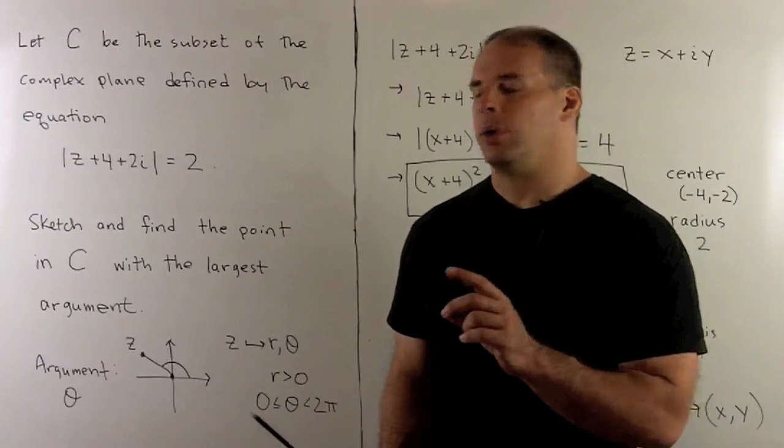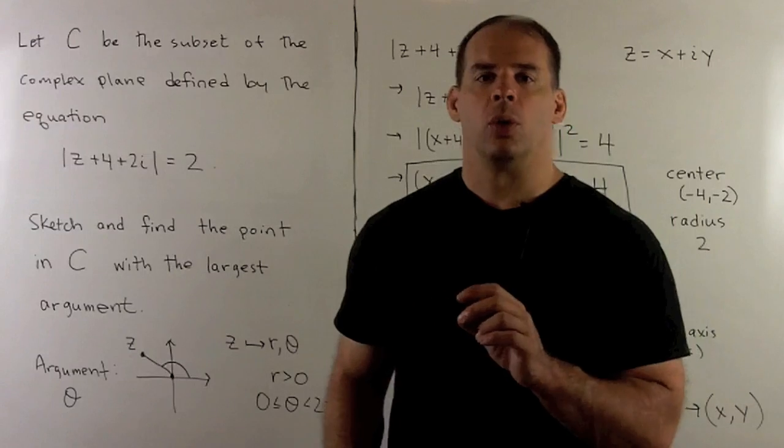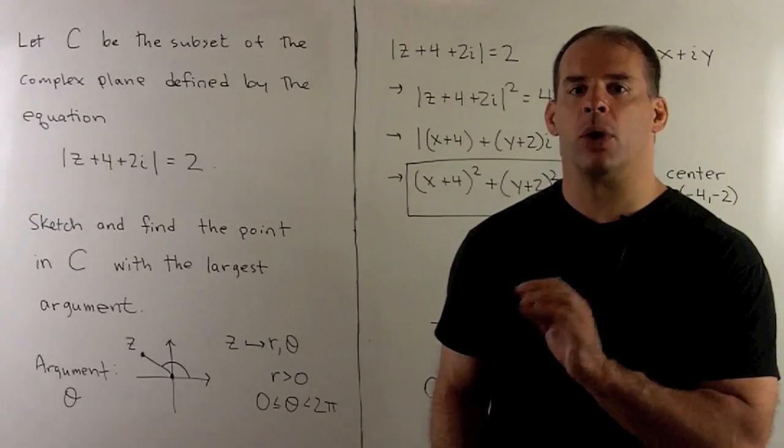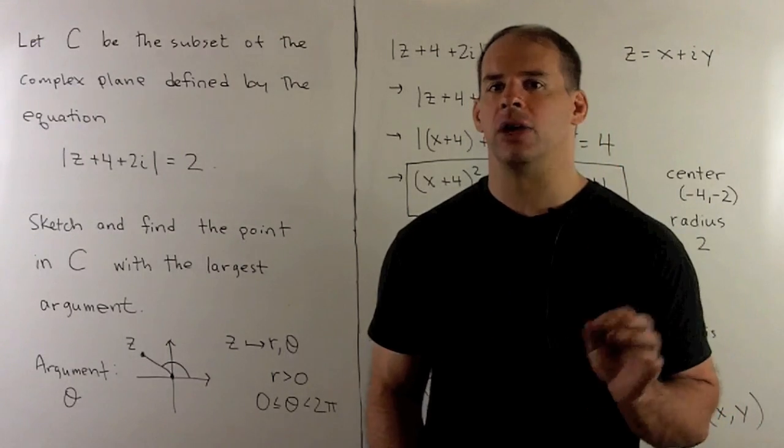Now, if we find a theta that goes with our z, we get other angles by adding multiples of 2 pi. So, for here, we're only going to consider arguments that are between 0 and 2 pi, including 0.